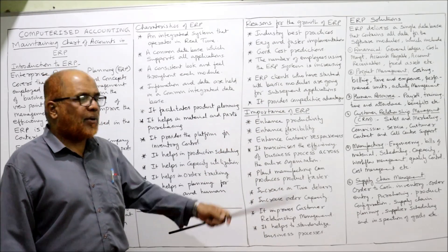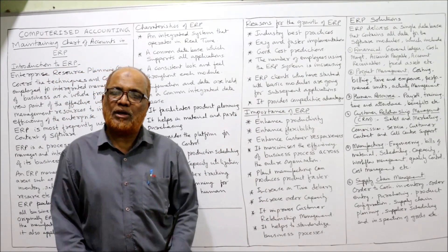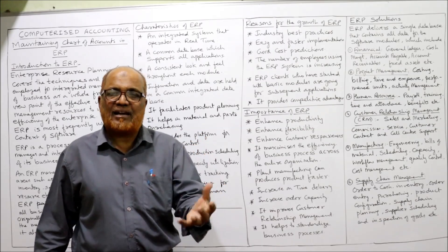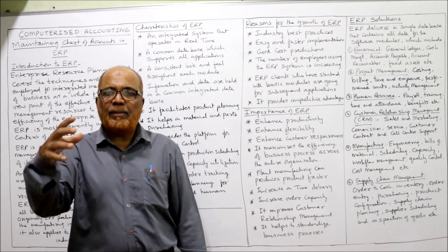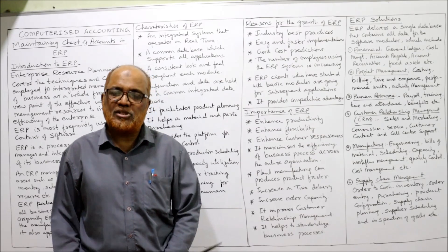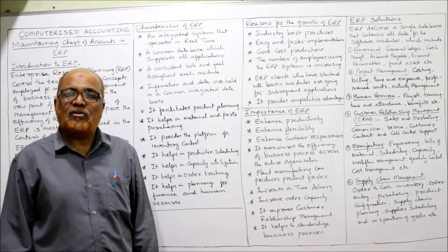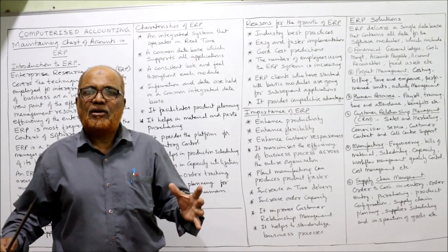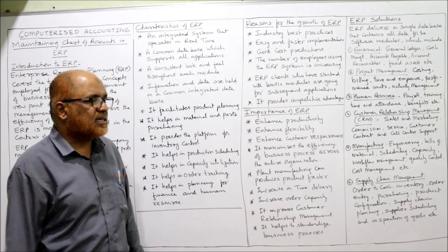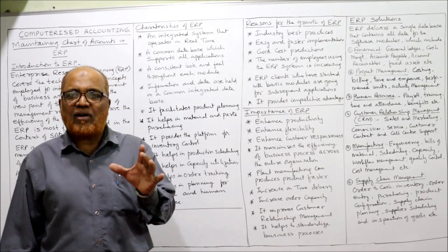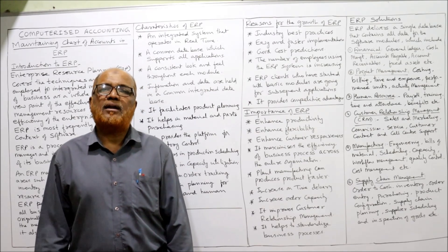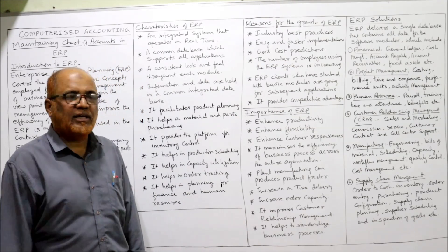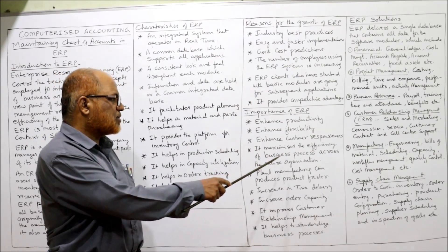The importance of ERP: ERP is very important because it integrates all departments in the organization and centralizes information. It enhances productivity — implementing ERP increases the productivity of all factors of production. It enhances flexibility, allowing changes to different business activities. It enhances customer responsiveness — we can track orders and satisfy customers, making customer satisfaction possible with the help of ERP.